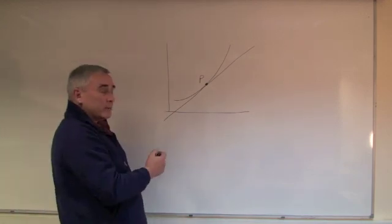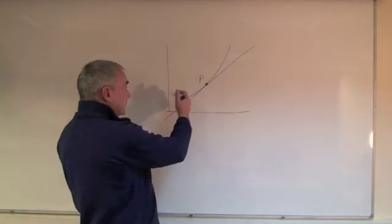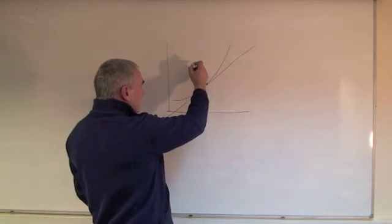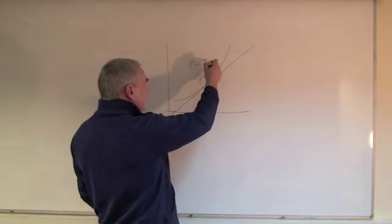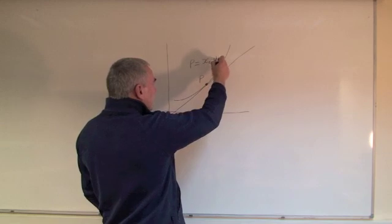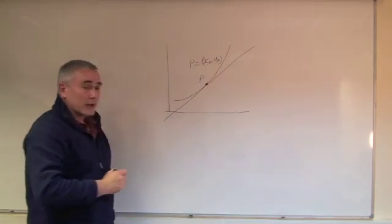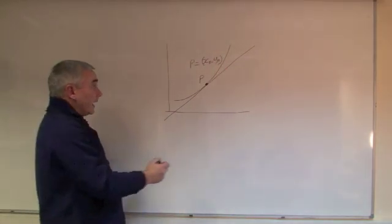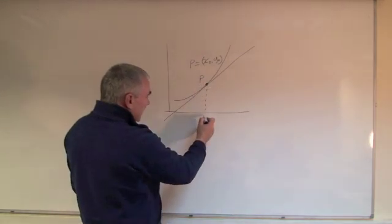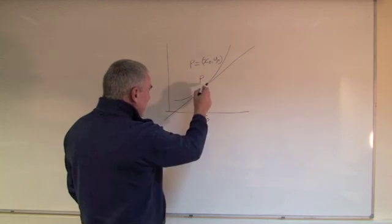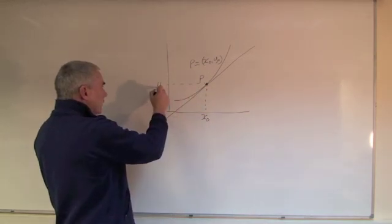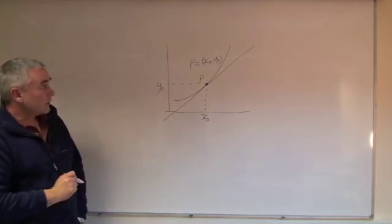Let's give our point P some names. We'll define point P as being X0, Y0 using normal Cartesian coordinates. If that's X0, then that will be X0 down there and Y0 at this point here.